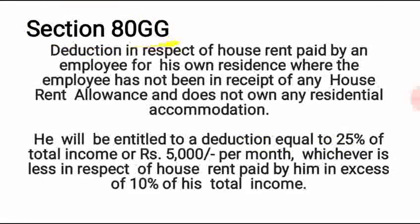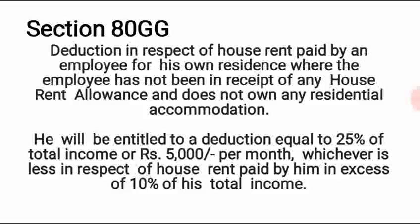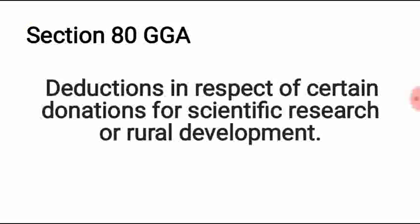Section 80GG has been discussed in detail in a separate video. This section applies to those government employees who are not in receipt of HRA — who do not get HRA and are not living in their own house but are living in a rented accommodation and paying rent. Under this section, a deduction is available up to 25% of total income or Rs. 5,000 per month, whichever is less, provided that rent paid exceeds 10% of salary income.